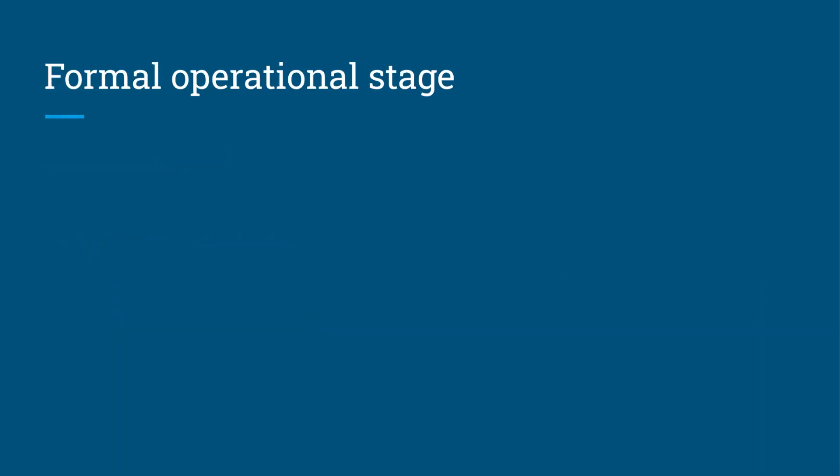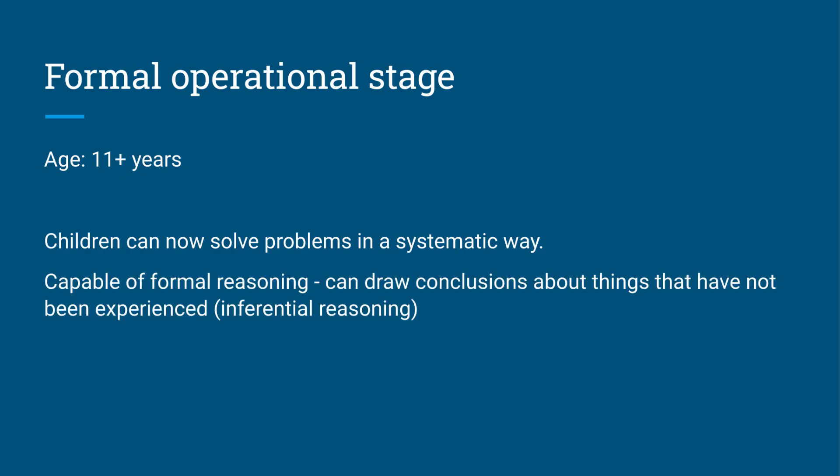Finally, we have the formal operational stage. This is for children who are older than eleven years of age. Children can start to solve problems in a systematic way, and they're capable of using something called formal reasoning. They can draw conclusions about things they haven't even experienced yet, based on their knowledge and their reasoning skills. They can solve problems in a systematic and abstract way. They can start to put together different sums, more complex equations, because they have that deeper understanding.